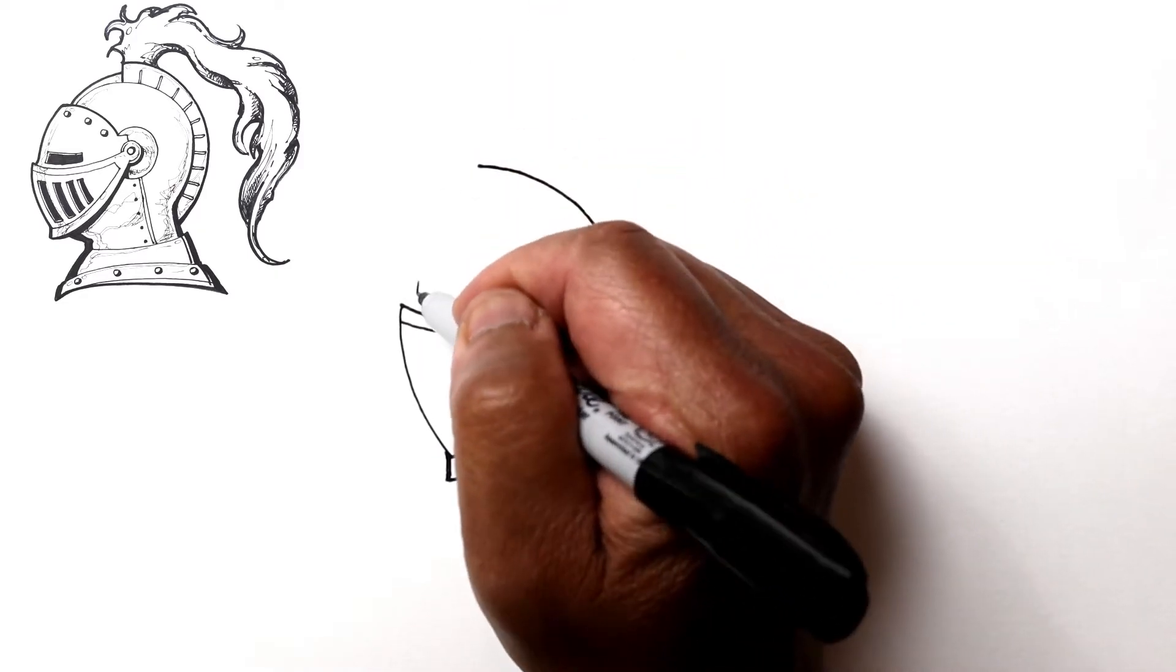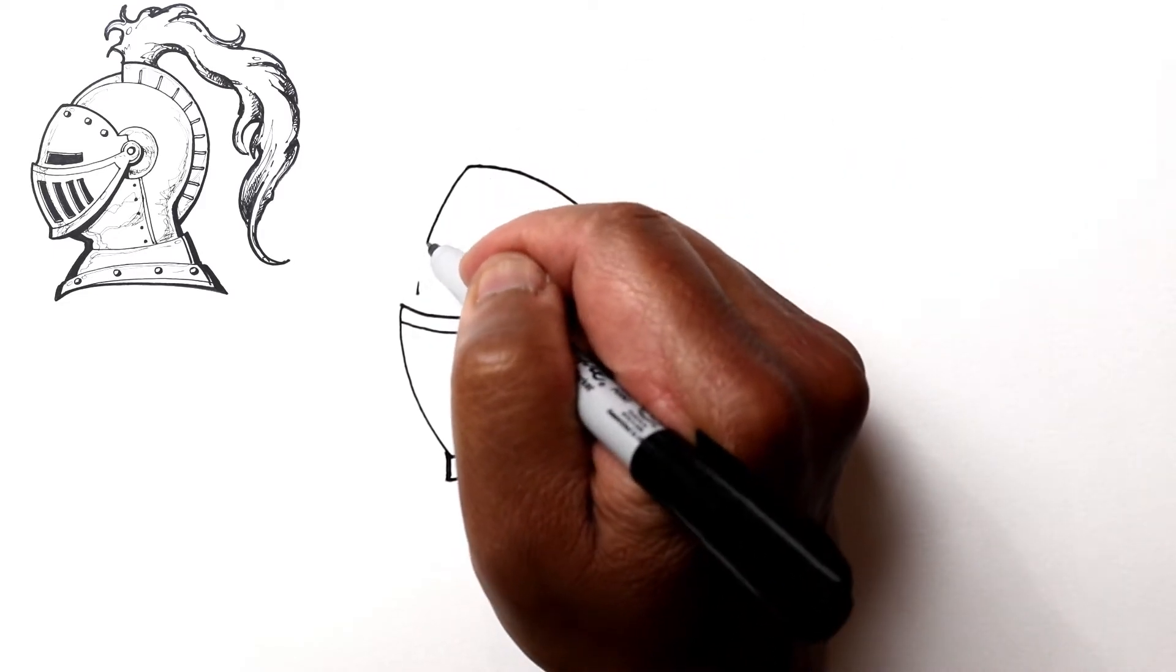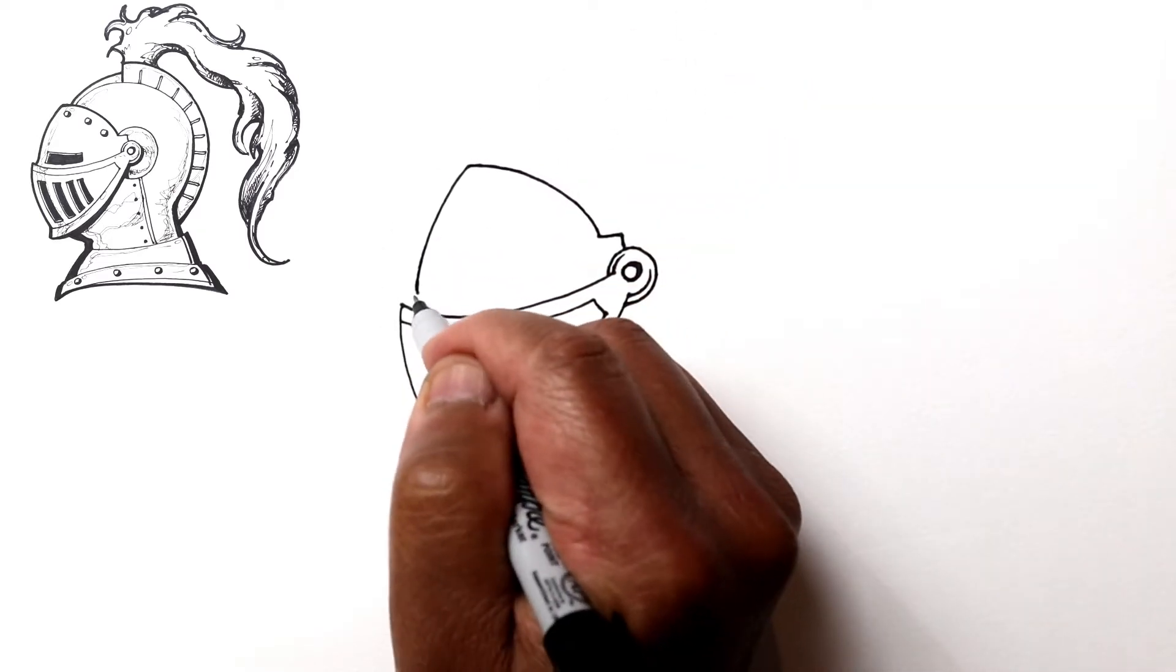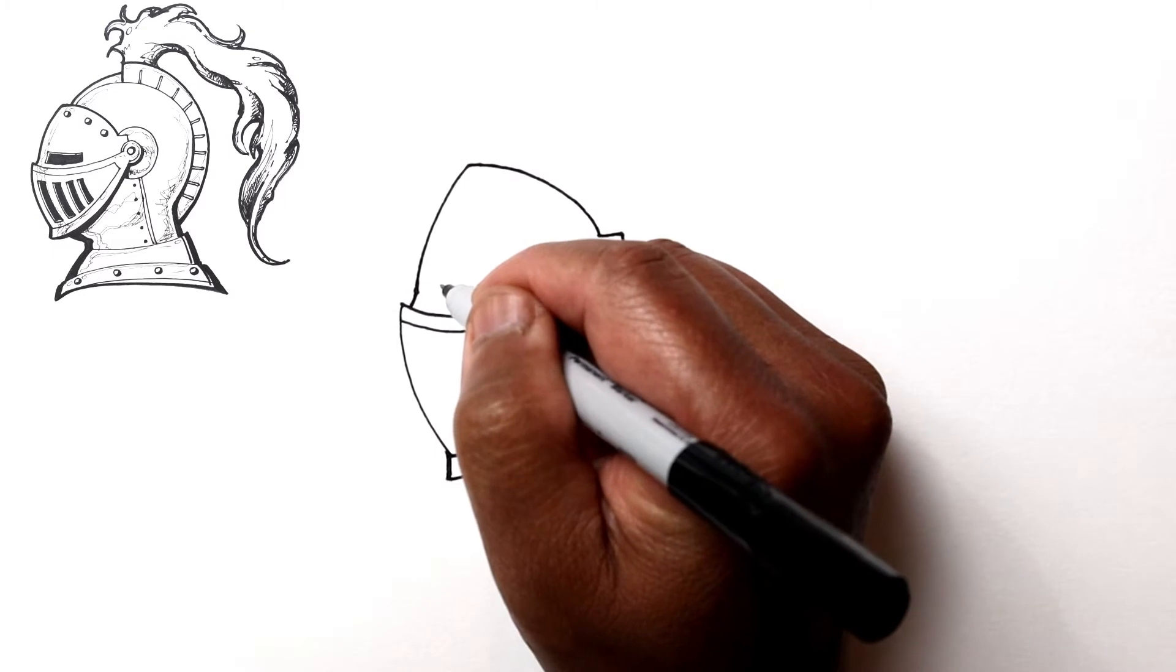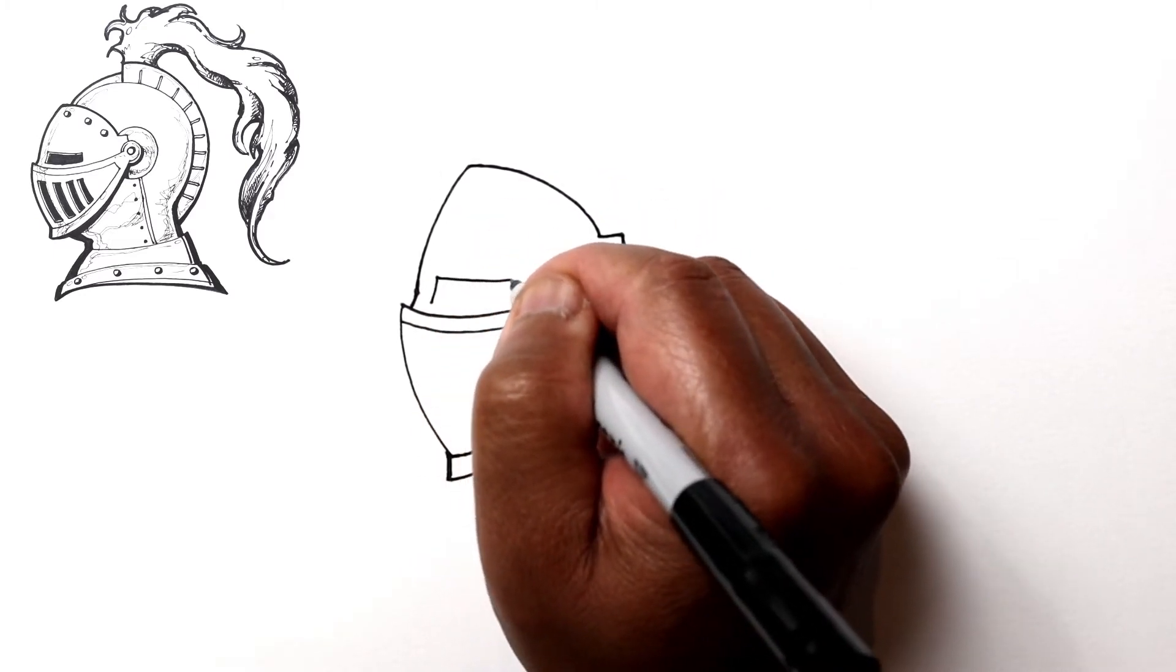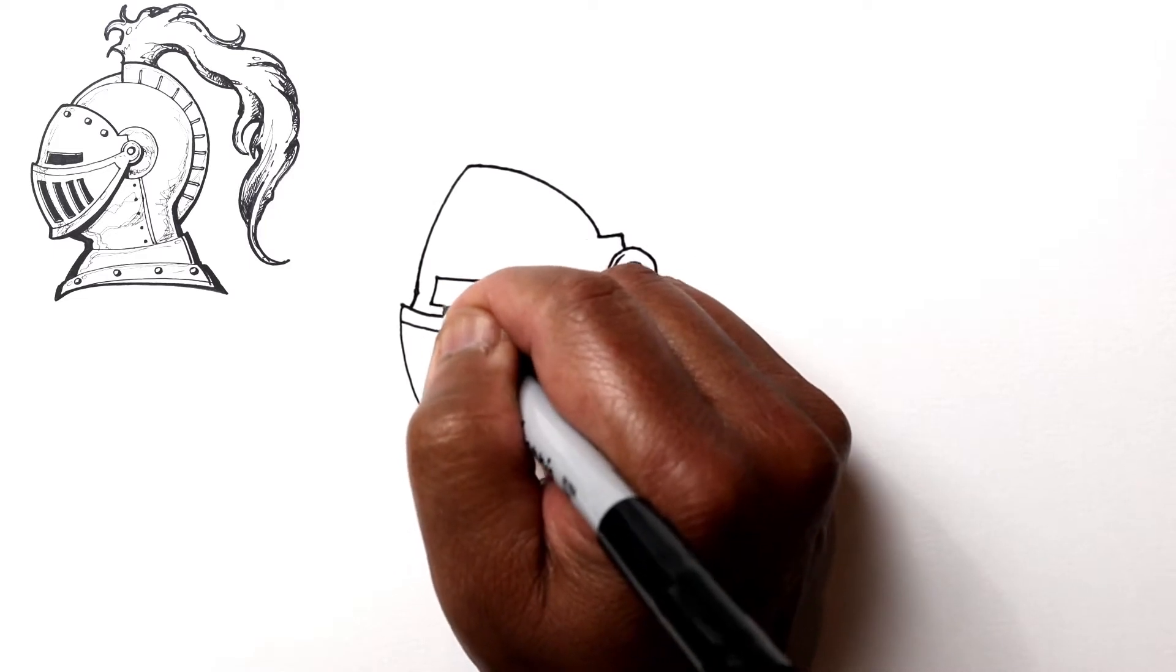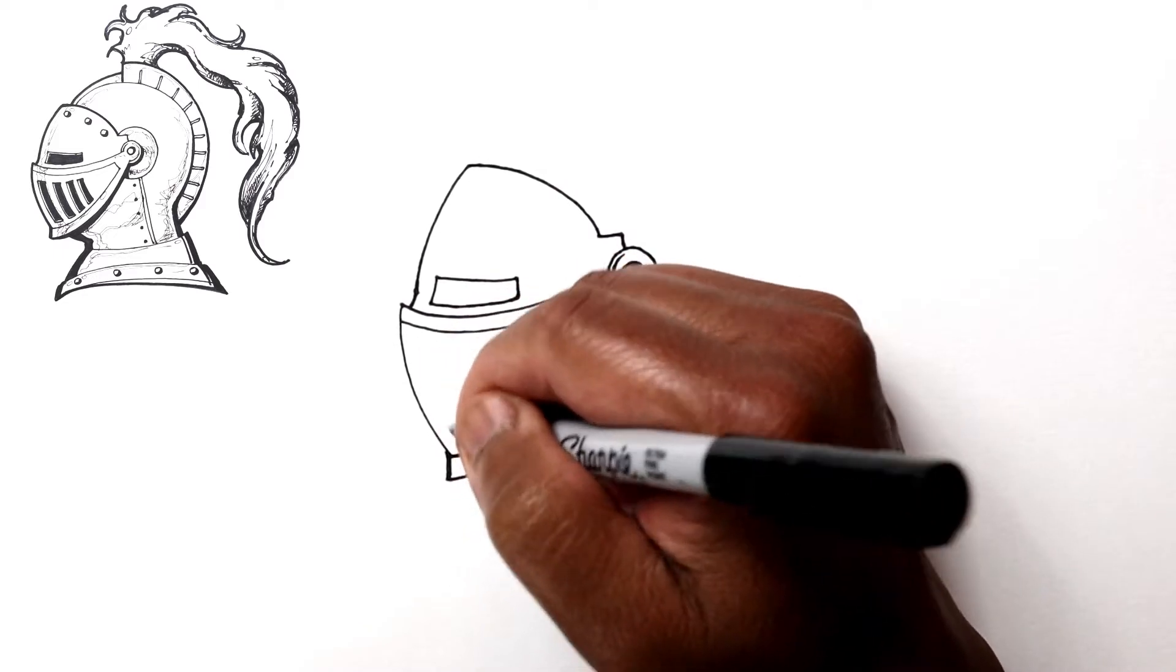Let's make that line and now we're gonna follow this down to right there and maybe curve it forward. Okay, so right here would be the eyes, so let's go ahead and put that in.